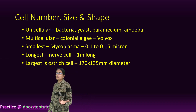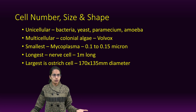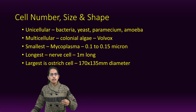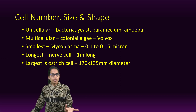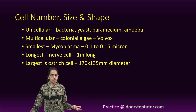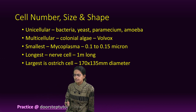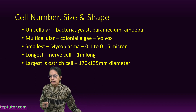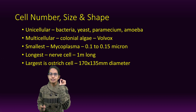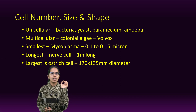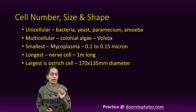A cell could be unicellular — examples include amoeba, chlamydomonas, yeast, and paramecium. Then we have multicellular organisms such as colonies of algae in the form of volvox, and human beings. If we talk about one of the smallest cells, mycoplasma is the smallest cell at 0.1 to 0.15 microns. It is believed that 10,000 mycoplasma in a row would be as wide as a human hair, so you could understand how minute mycoplasma is.